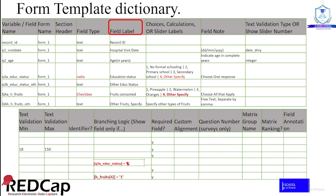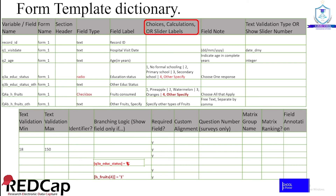The first field label is the record ID, followed by hospital visit date and age in years. Whatever you type in the field label column is what the respondent will read and respond to. The next column is choices, calculations, or slider labels. This specifies the responses and options the respondent needs to select for your question.